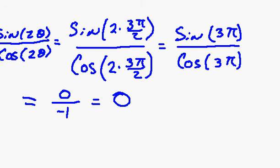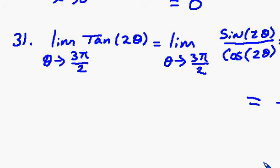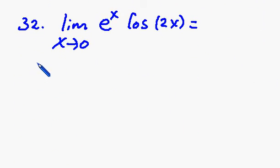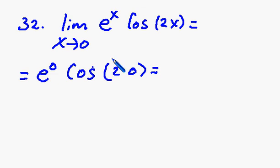Let's move to number 32. We just do direct substitution, plugging 0 in for x. So we have e to the 0 and then cosine of 2 times 0. e to the 0 is 1, any number raised to the 0 power is 1, times cosine of 0. Cosine of 0 is 1 also. Therefore, your final answer is 1.